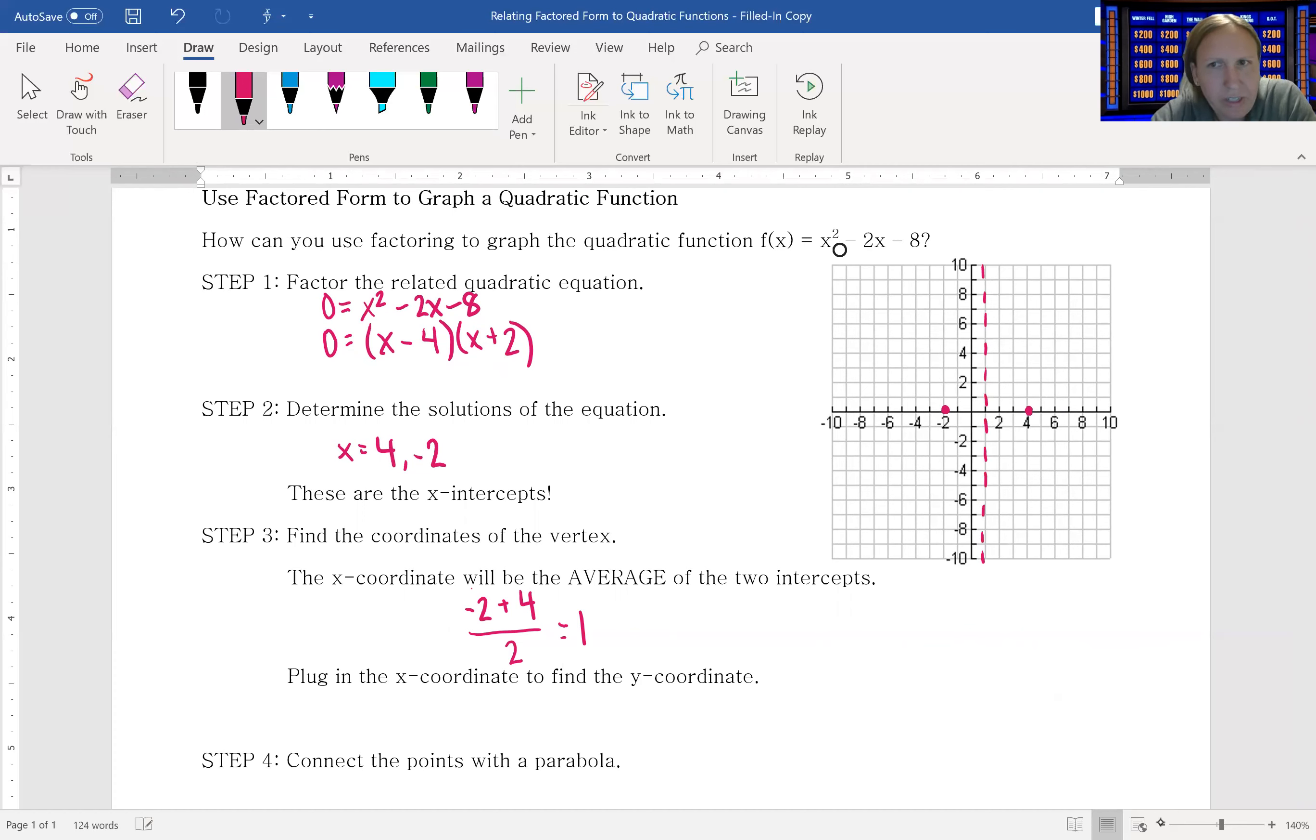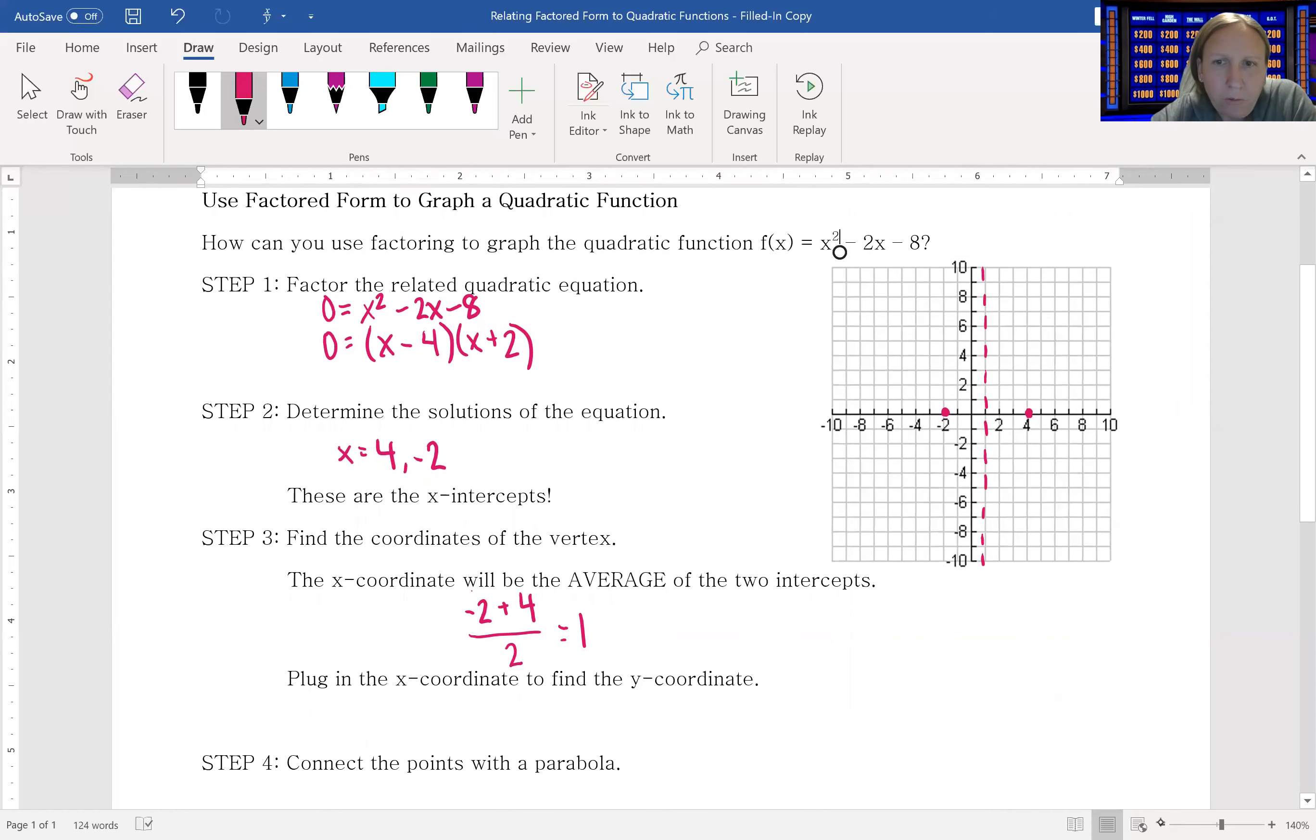So I'm just going to draw it in. And then we can plug in the x-coordinate to find the y-coordinate. So I have 1² - 2(1) - 8. This is 1 - 2 - 8, that'd be -1, and -1 - 8 is -9. So the vertex is at (1, -9).